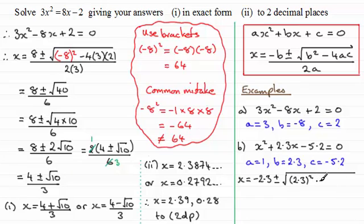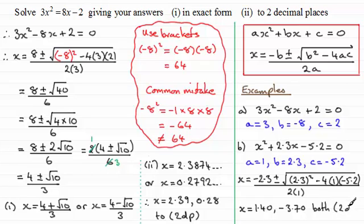Then it's going to be minus 4 multiplied by a, which is 1, multiplied by c, which is minus 5.2. And all of this is divided by 2 times a, 2 times 1. And if you work this out on your calculator, giving your answers to two decimal places, you get x equals 1.40 and the other one is minus 3.70. And both of those are given to two decimal places.